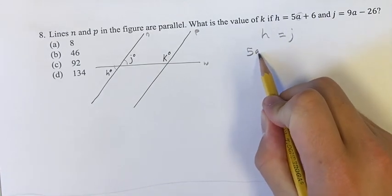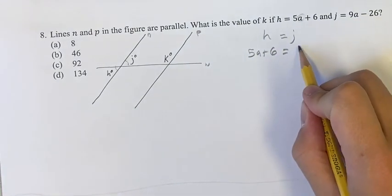h we know is 5a plus 6, and we know that's equal to j, which is 9a minus 26.